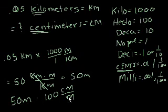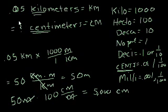So 50 meters times 100 centimeters per meter is equal to 50 times 100 is 5,000. And then the meters cancel out and you get centimeters. So what we have here is that 0.05 kilometers is equal to 5,000 centimeters.